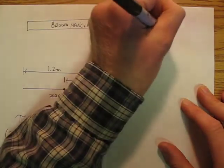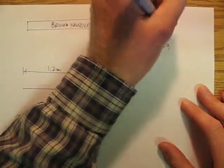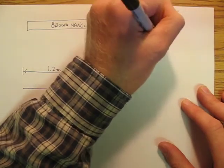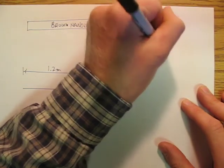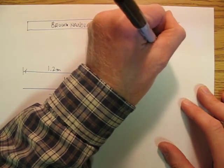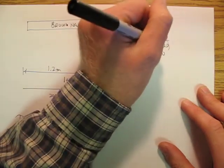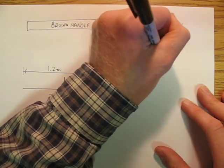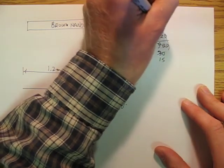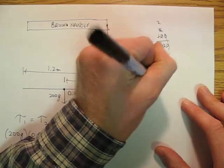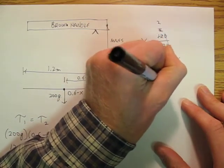Now I can cancel a 0 and get 12 out of 90. I know that they both have at least a 3, so that becomes 30 and that becomes 4. And I know there is at least a 2, so that's 15 and that's 2. So x is 2 over 15.